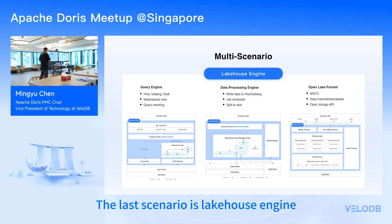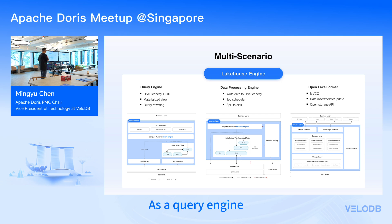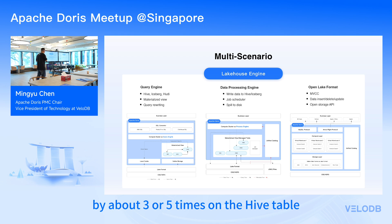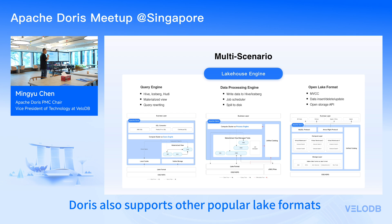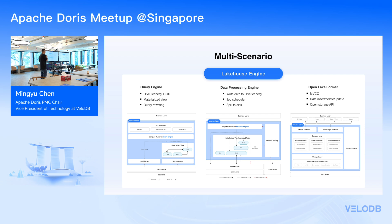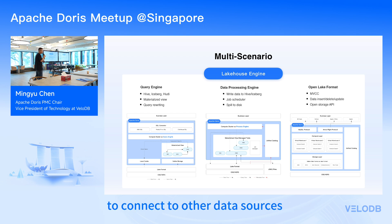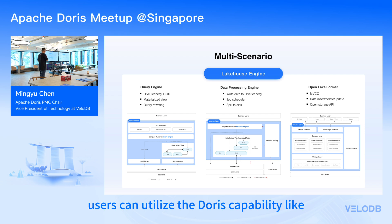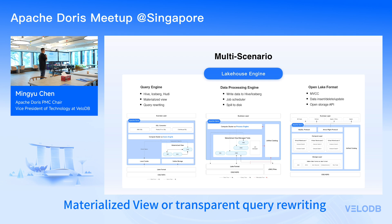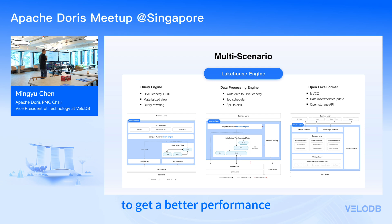The next scenario is a lakehouse engine. As shown earlier, Doris as a query engine is three to five times faster than Trino on Hive tables. Besides Hive, Doris also supports other popular lake formats like Iceberg and Hudi. In version 3, we also have Trino connector compatibility, so you can use the Trino connector to connect to other data sources like BigQuery, Kudu, Redis, or Kafka. Users can also utilize Doris capabilities like materialized views and transparent query rewriting to get even better query performance.